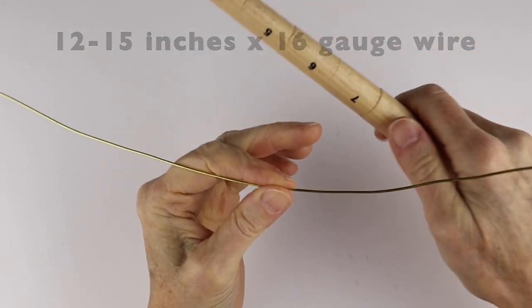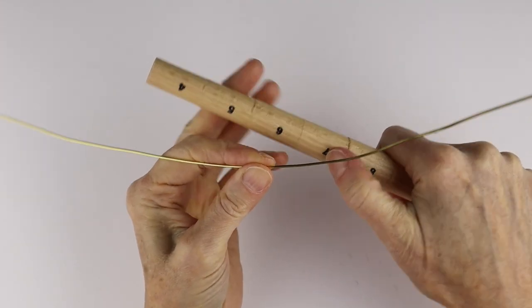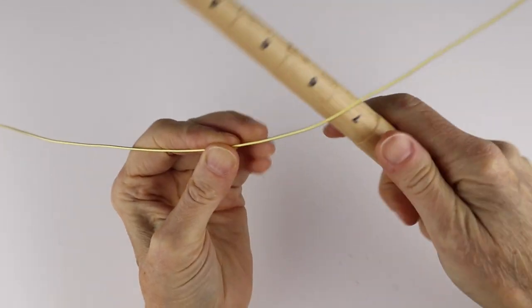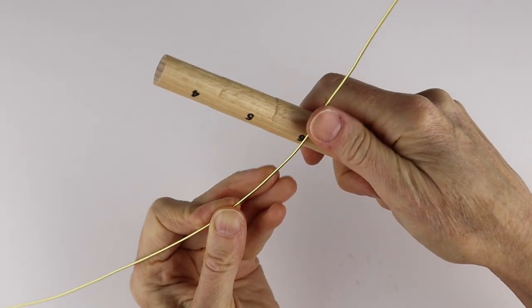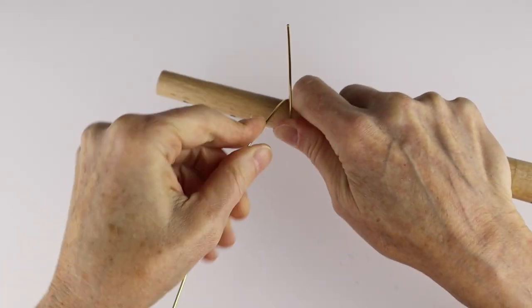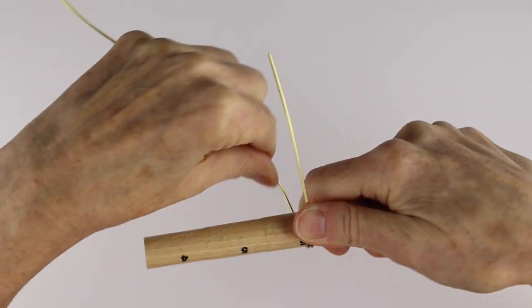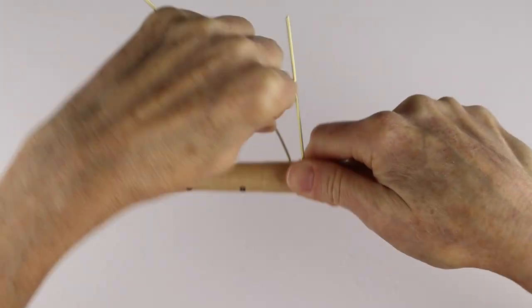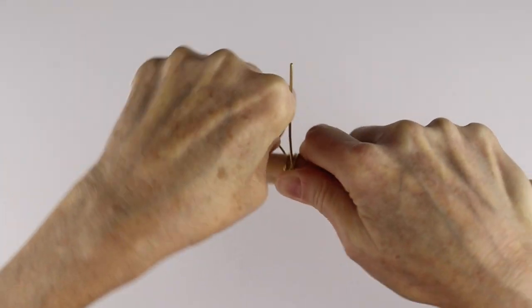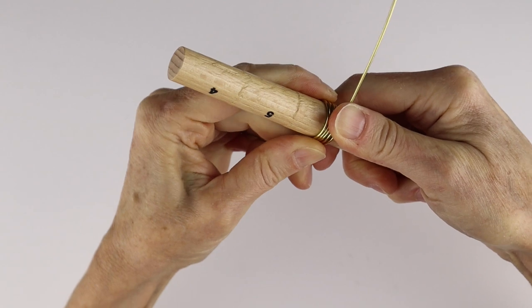Take about a 12 to 15 inch piece of the 16 gauge wire. I want to make a size 7 ring, but this wire has a lot of tension, so I'm actually going to wrap it around the 6 and then we'll see how much it springs back. So we're going to go around about five times.